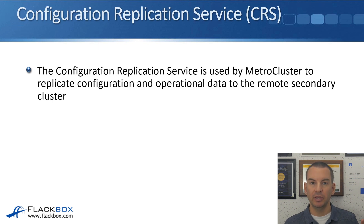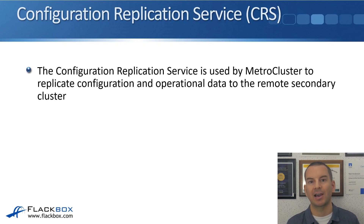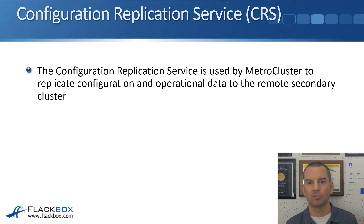Finally, we've got the configuration replication service. The configuration replication service is used by MetroCluster to replicate configuration and operational data to the remote secondary cluster. MetroCluster is a disaster recovery feature — you can have half of your system in one building and the other half in a separate building in a different area. That way, if you lose either building, your clients still get access to their data. This is another thing we'll be covering in more detail later in the course.